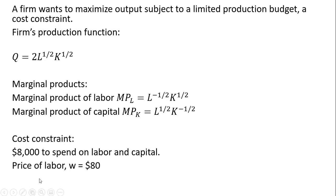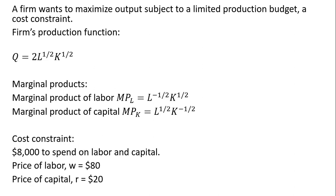We're also given our cost constraint. We have only $8,000 to spend on units of labor and capital. In the market, the wage rate is $80, and the price of capital, R, is $20. Our goal is to produce as much output as possible given our production function and that we only have $8,000 to spend at those market prices.